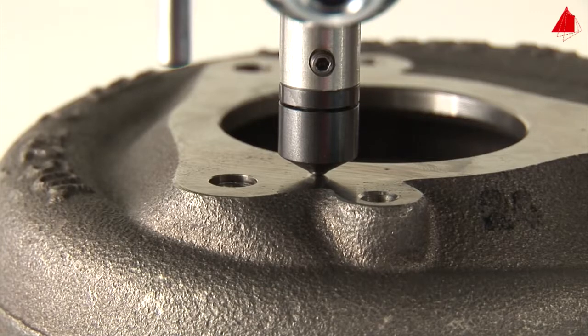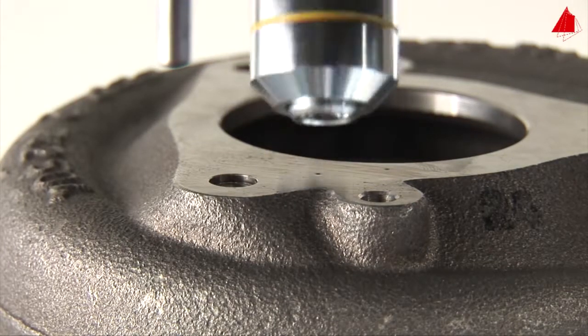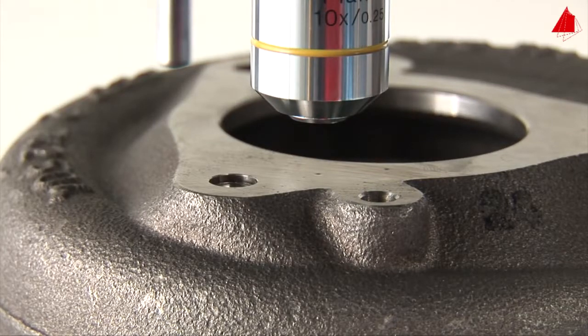After maintaining the test force for a certain time, the indenter automatically lifts off again and the microscope lens pans back to its former position.